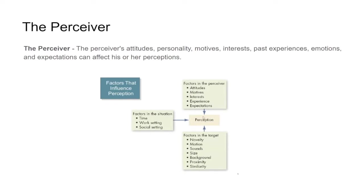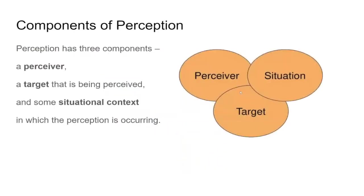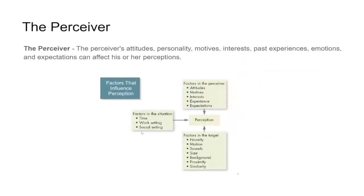We can break perception down into three major components. The situational factors that influence our perception include time — how much time you have to look at something — the work setting that you find yourself in, whether it's a pleasant situation at home, in a classroom, or at a desk at work. That's certainly going to influence your perception.